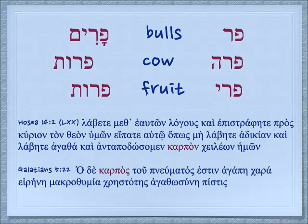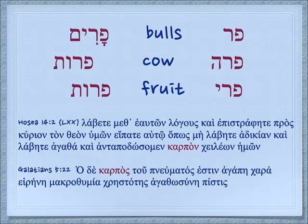The word for bull is par, and the plural of that will be a masculine plural: parim. The word for cow is feminine, coming from the masculine par — it is para — and the plural is parot. We have another word that has the same root: pre. All these have to do with fruitfulness — we want our cows and bulls to be fruitful. And the plural of fruit is perot. In the modern spelling it will have an extra letter so that you can see the difference between the female cows and the fruit.